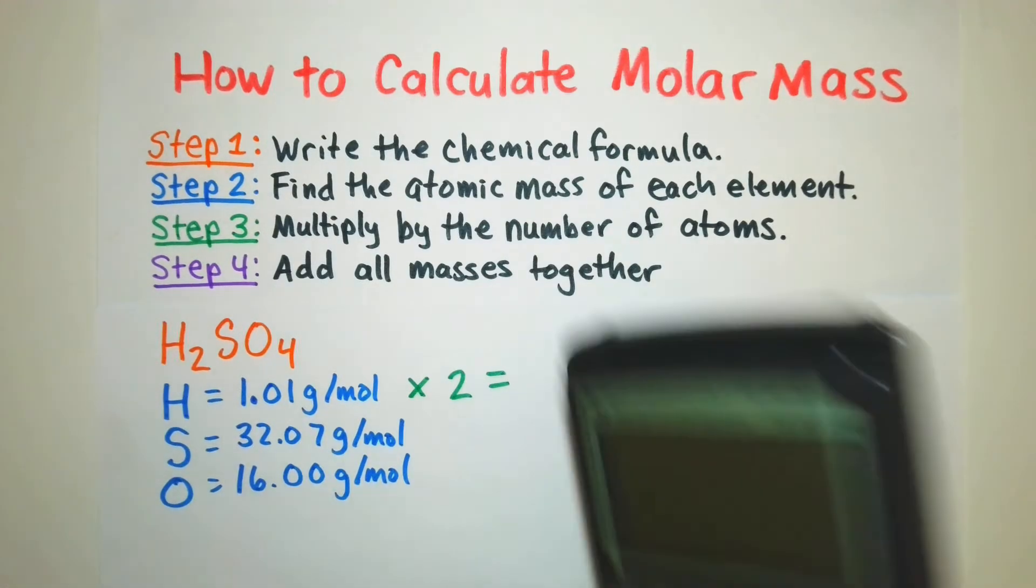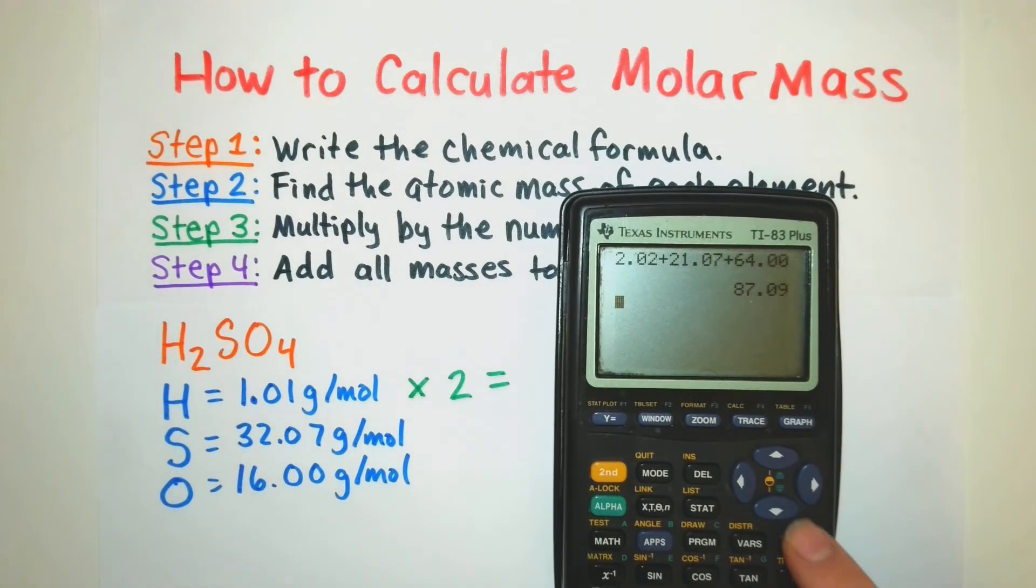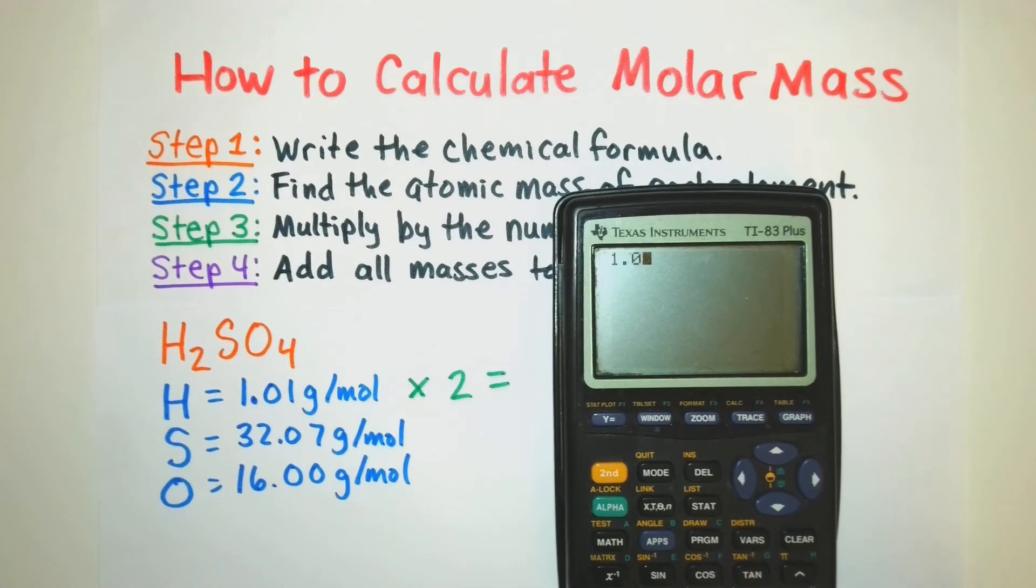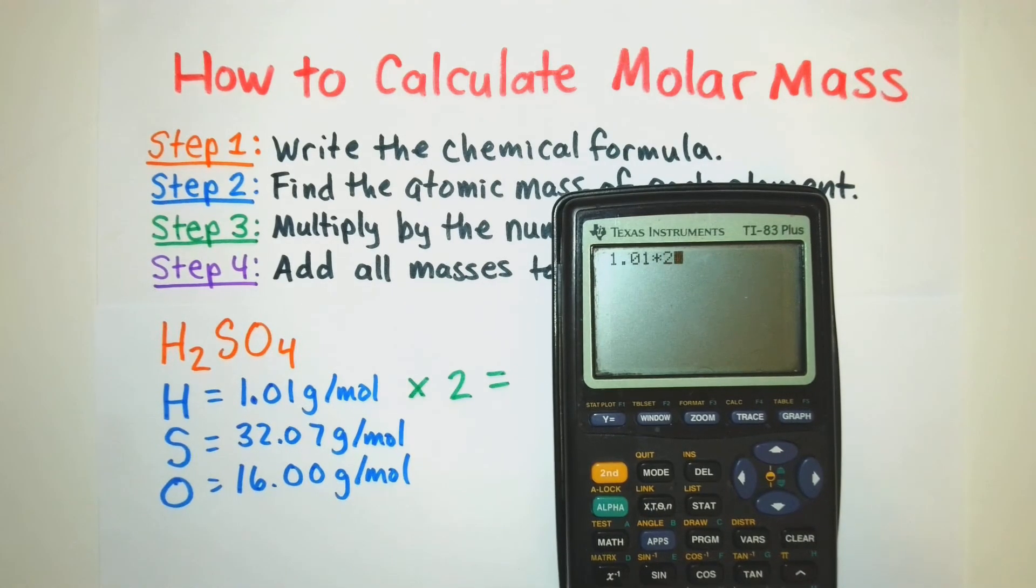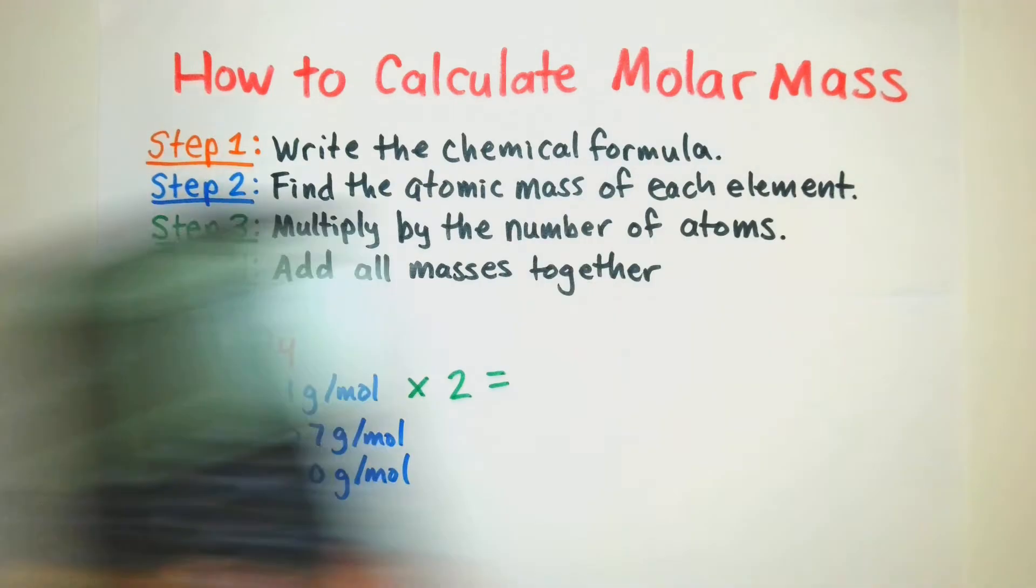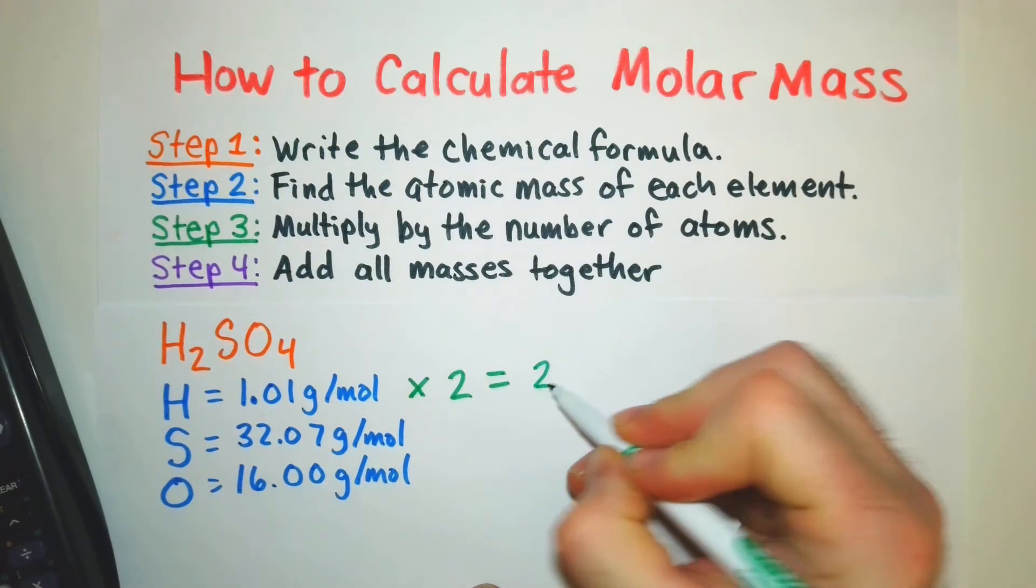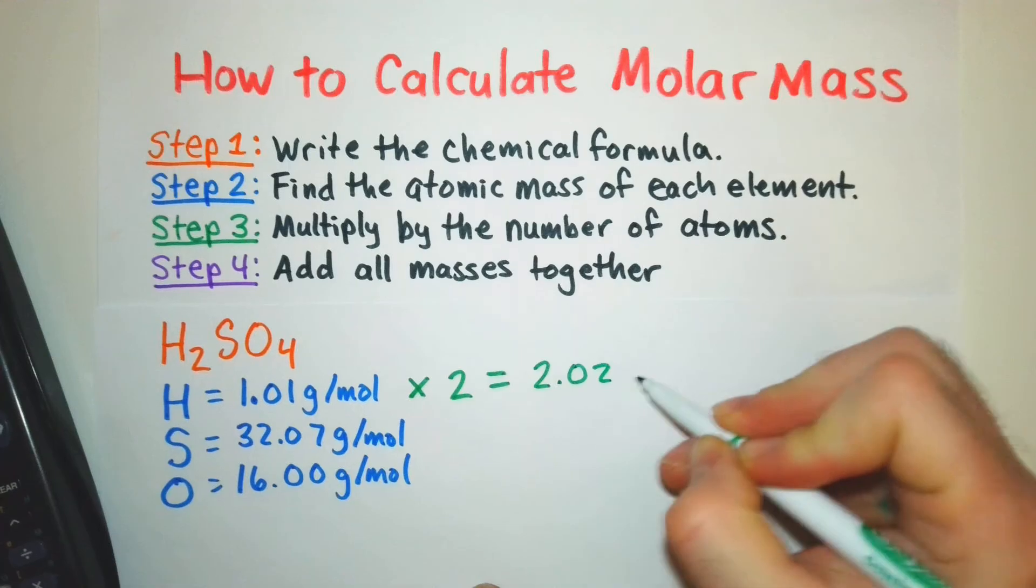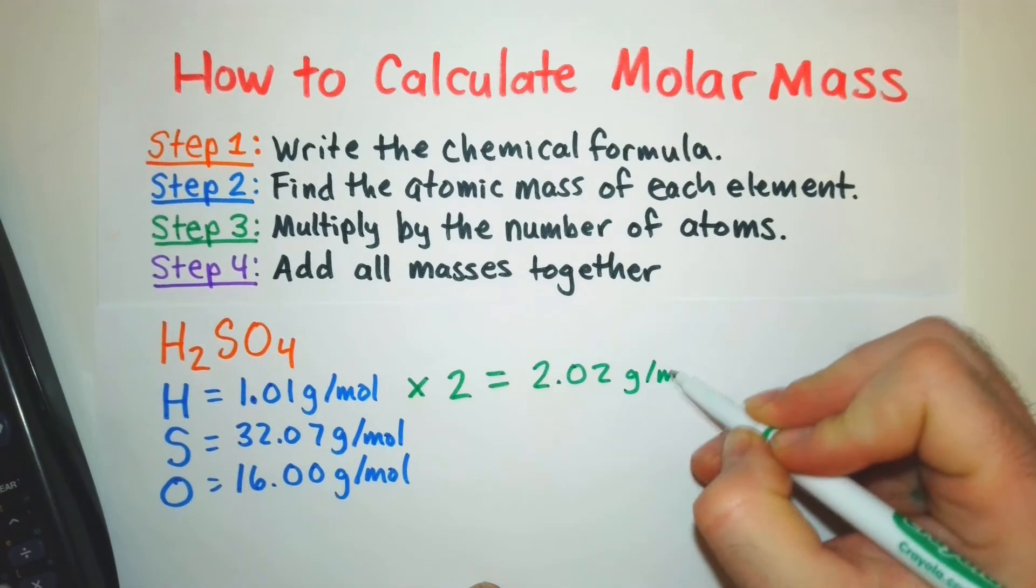I like to use a calculator so I can prevent simple mistakes especially when I'm in a rush or maybe I'm nervous because of a test. All right so that's 2.02, 2.02 and the units are grams per mole.